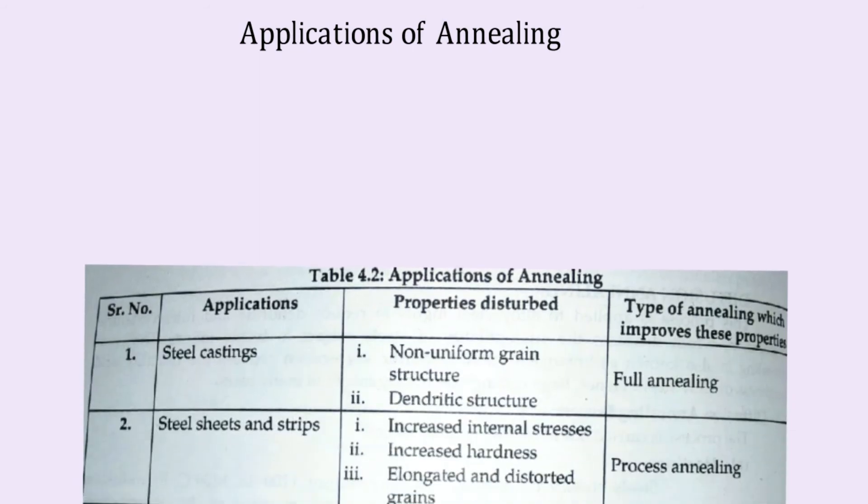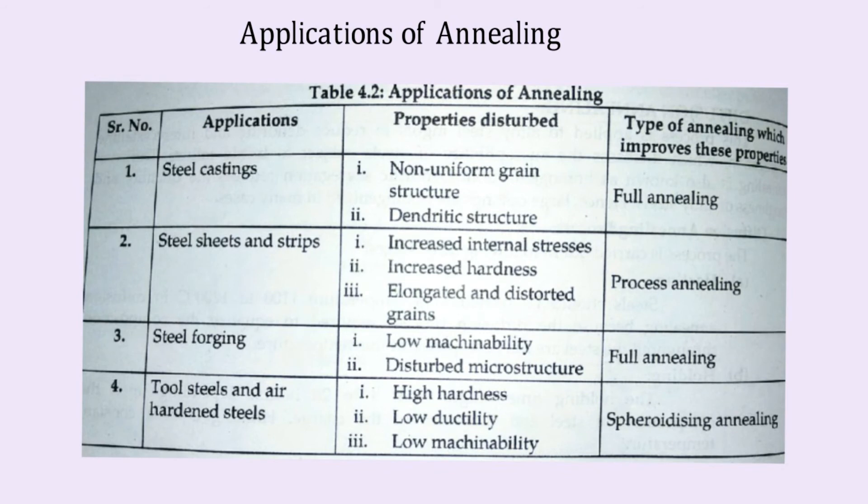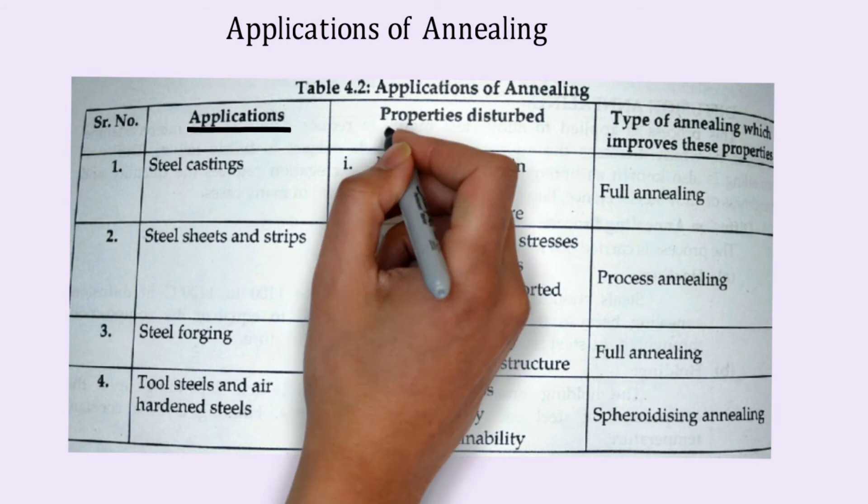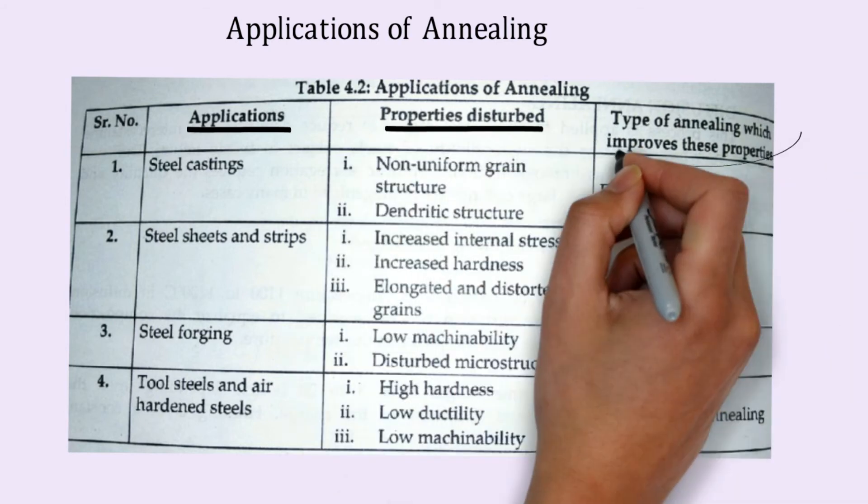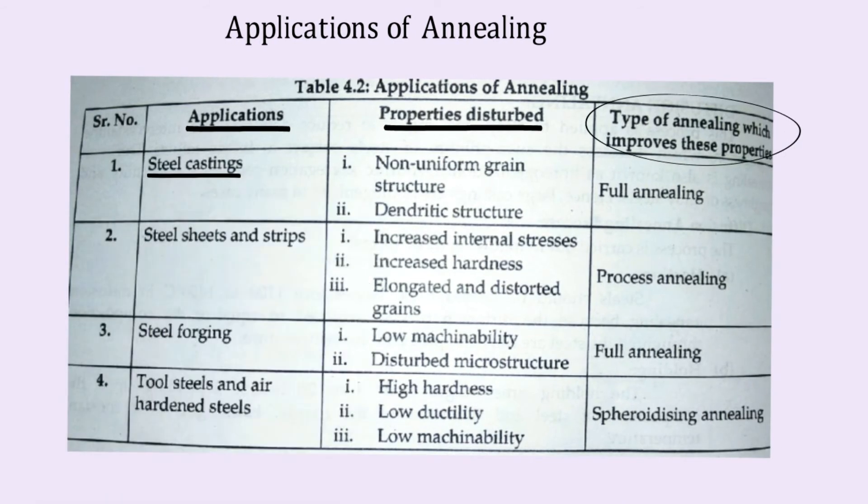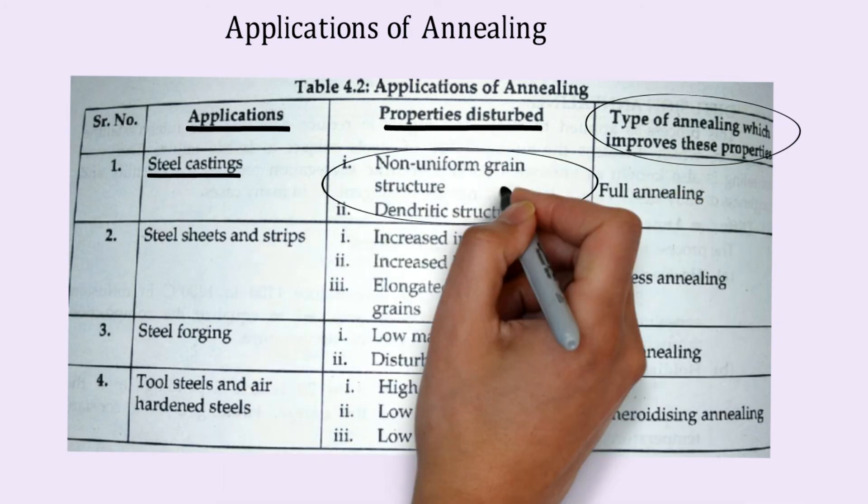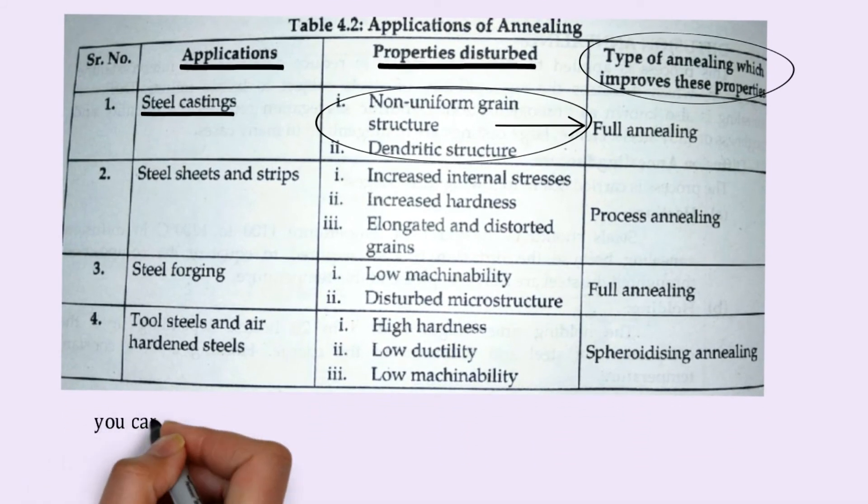Let us understand the applications of the annealing process. This chart shows the applications of annealing, like in which application which kind of annealing is suitable. For example, the application of steel castings shows the properties which get disturbed and the type of process which is used. For steel casting having non-uniform grain structure and interdendritic structure, it is altered by the process of full annealing.